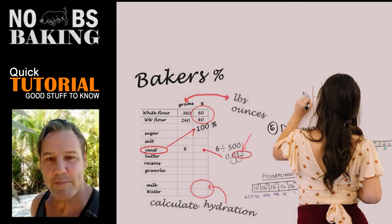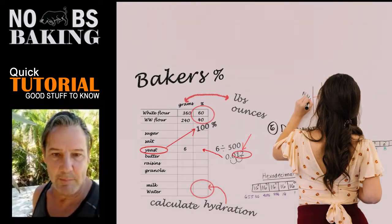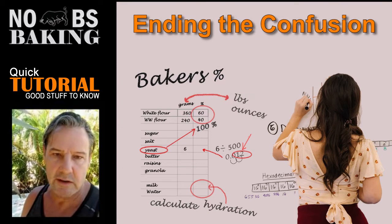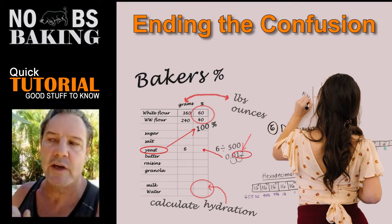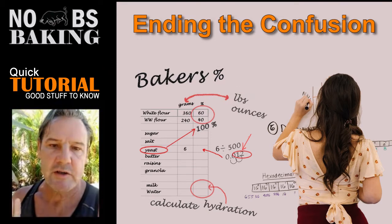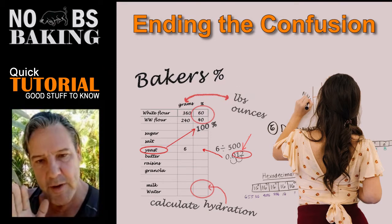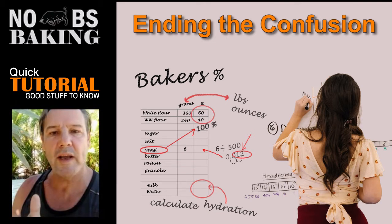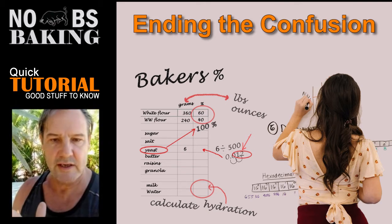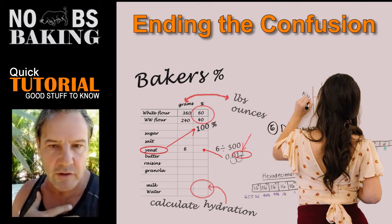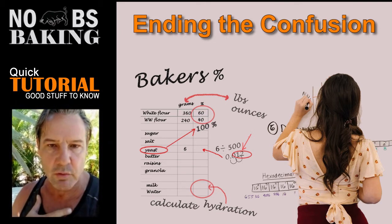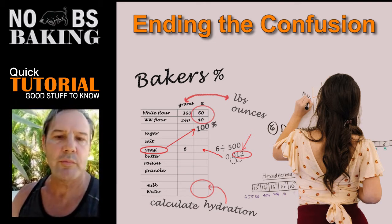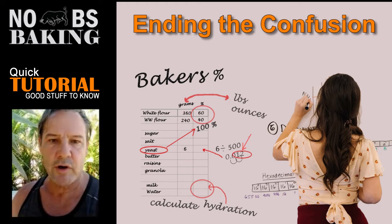Greetings and welcome to No BS Baking. You got JP here. Today we're going to talk a little bit about Baker's Percent, but I'm going to be giving you a really simple way to do it. It's the way I learned in baking school. It's all to do with ratio and proportion.